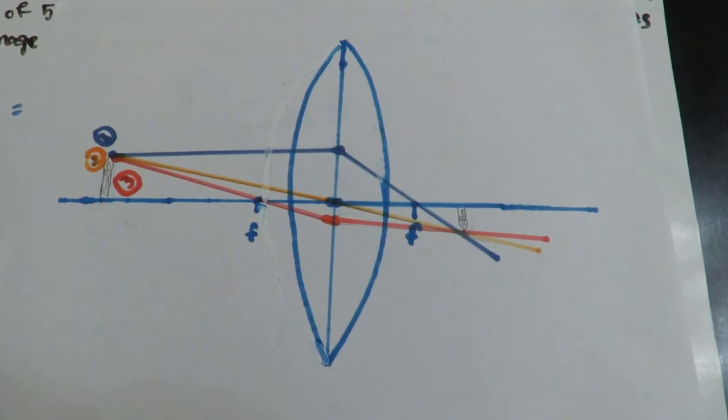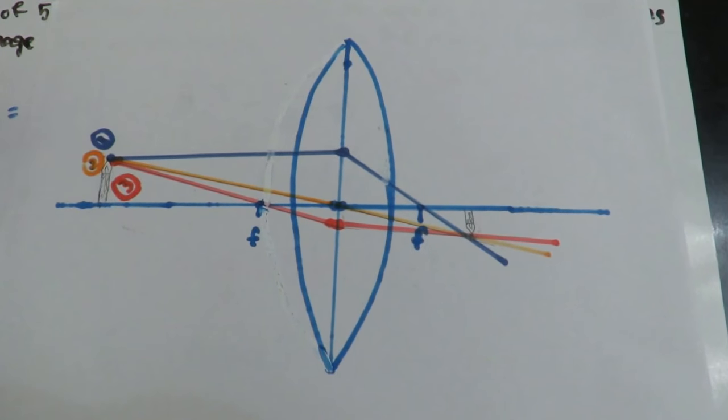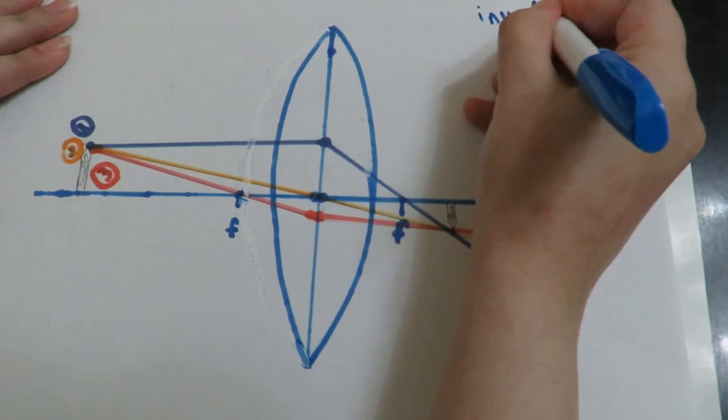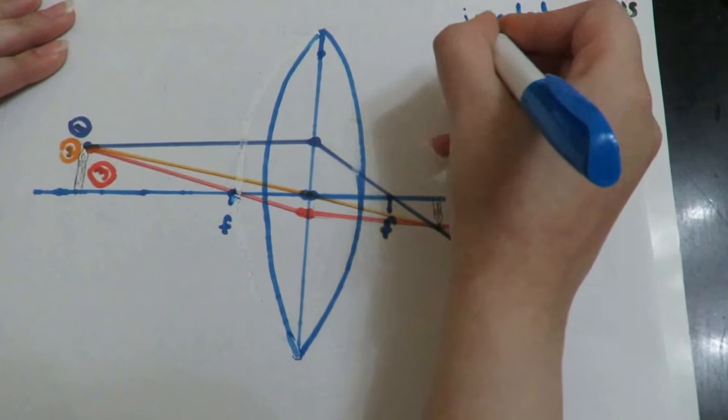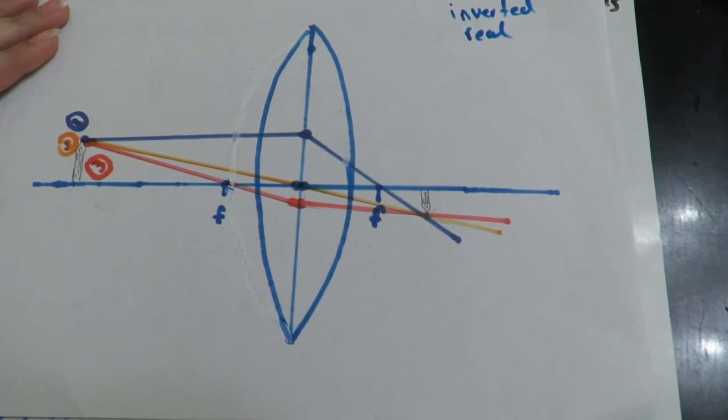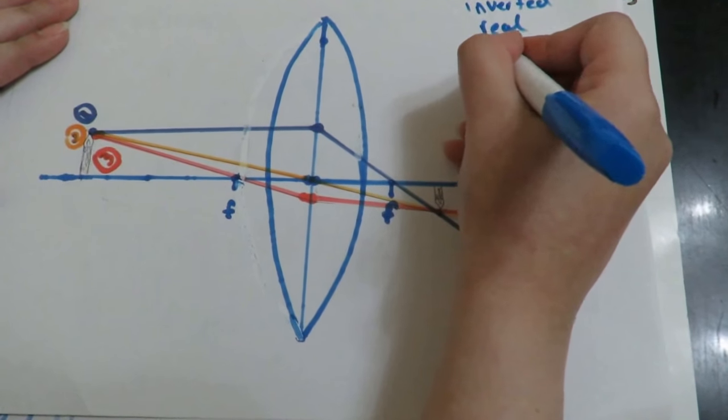So the image is inverted because the magnification is negative, and it is real because Q is positive, the image distance. And it is small.